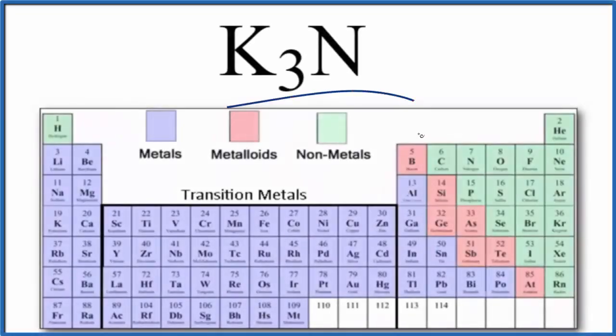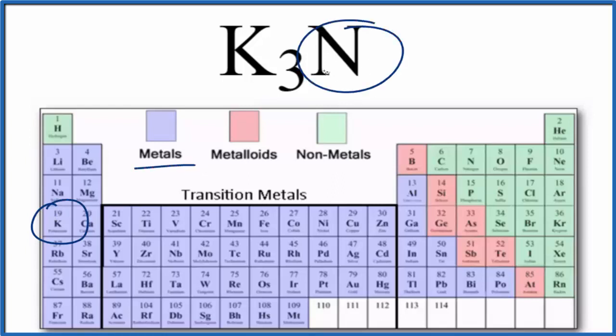To determine whether K3N is ionic or covalent, let's first look at the periodic table divided into metals and nonmetals. So potassium, that's right here, and that's a metal. Nitrogen, that's over here, it's a nonmetal. When we have a metal and a nonmetal...